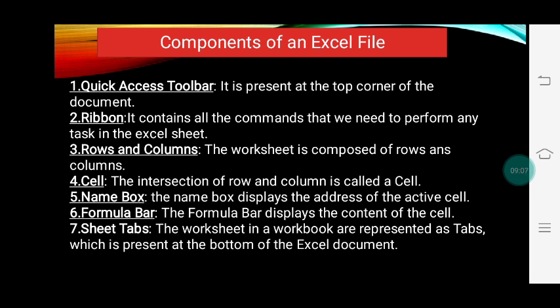You can identify the active cell by its thick border. When you select a group of cells, that group is called a cell range. Next is the Name Box, which displays the address of the active cell. If you select any cell, the name of that cell is shown in the Name Box.